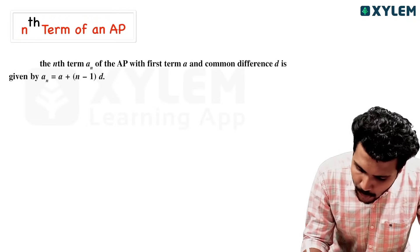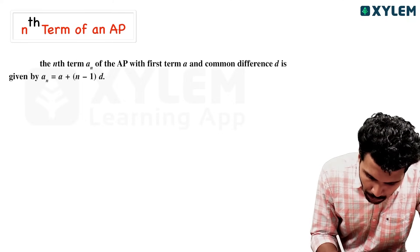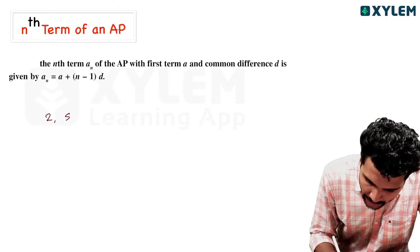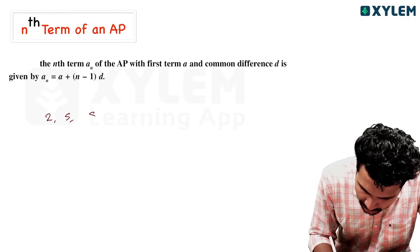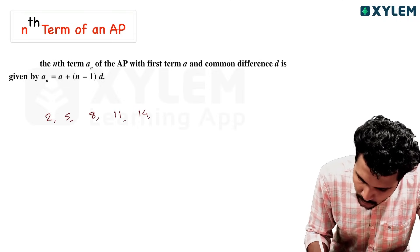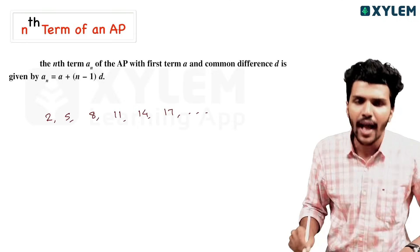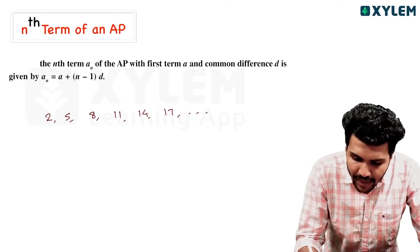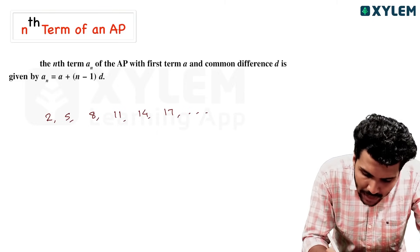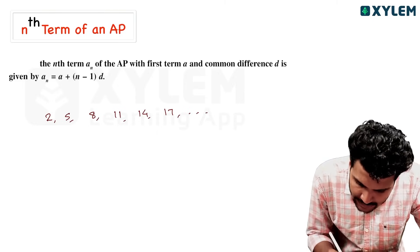Here is an arithmetic sequence: 2, 5, 8, 11, 14, 17, etc. The first term here is 2.